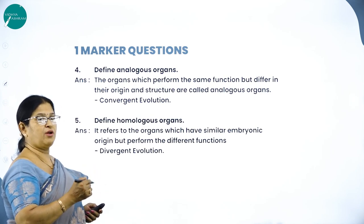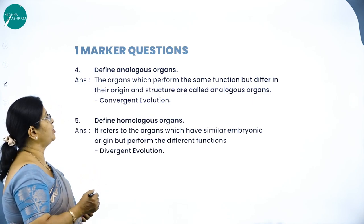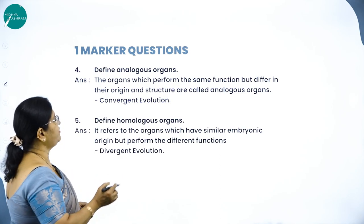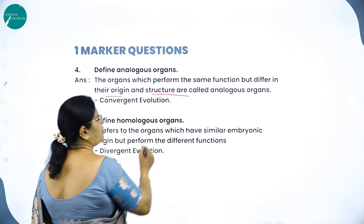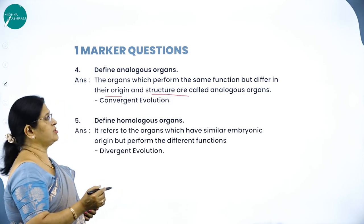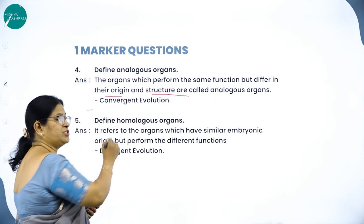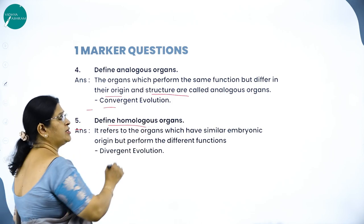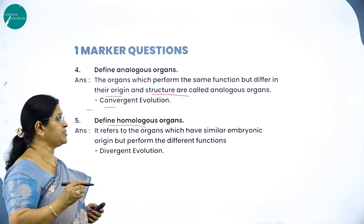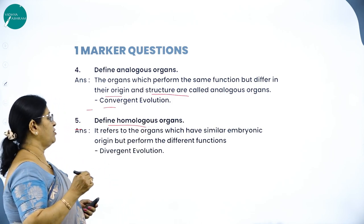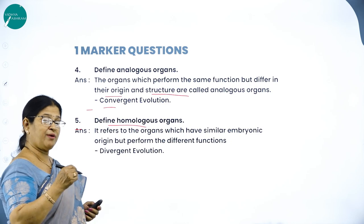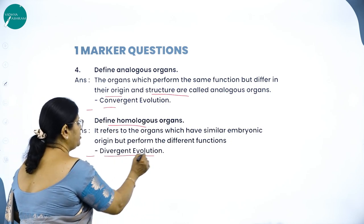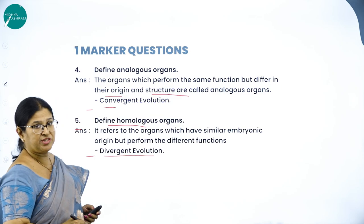Define analogous organs: the organs which perform the same function but differ in their origin and structure are called analogous organs, and they lead to convergent evolution. Define homologous organs: organs which have similar embryonic origin and same basic structure but perform different functions; they lead to divergent evolution.